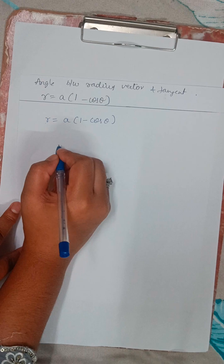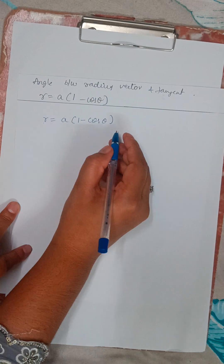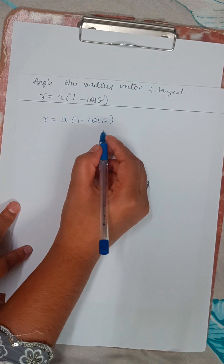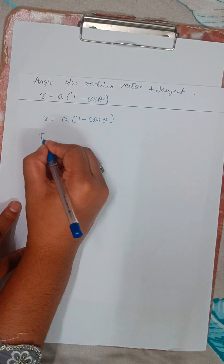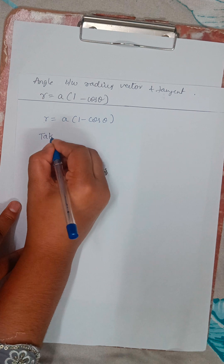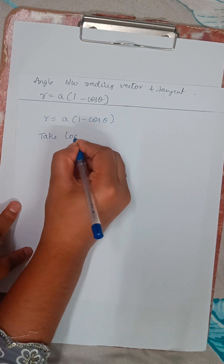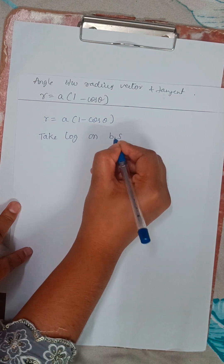We will be working with r = a(1 - cosθ). We will take log on both sides.